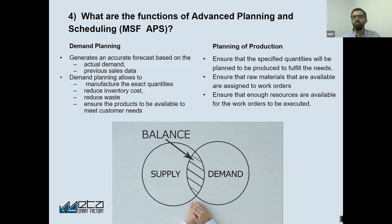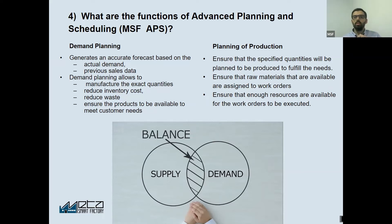APS also makes sure that you have enough resources available for the work orders to be executed. It checks shifts, calendars, and their settings so that it can assign correctly to workstations and produce the products at the specified quantities defined in the demand plan.